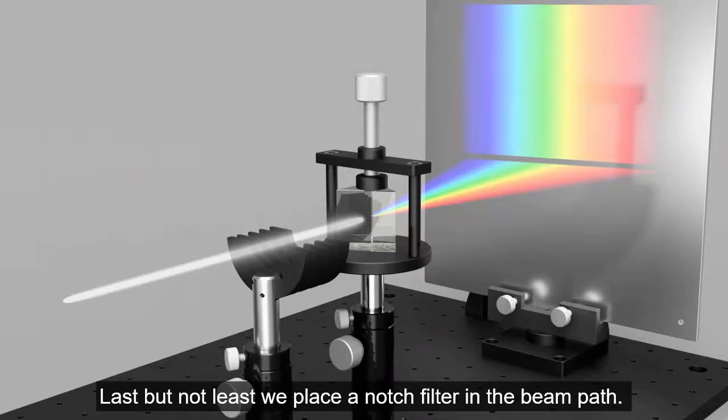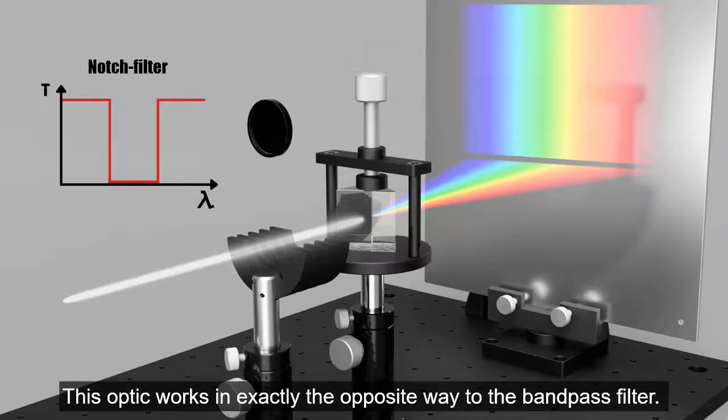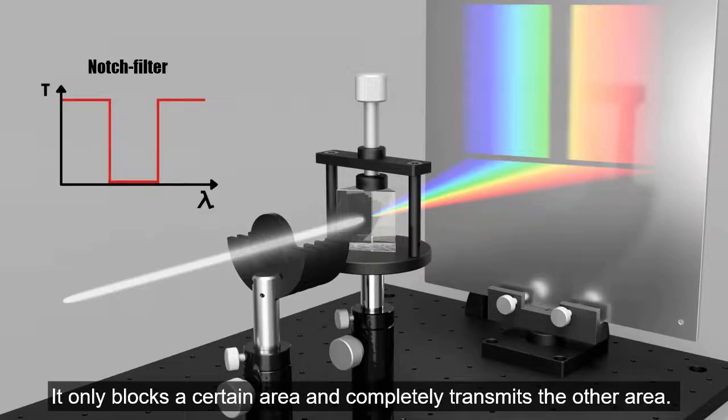Last but not least we place a notch filter in the beam path. This optic works in exactly the opposite way to the bandpass filter. It only blocks a certain area and completely transmits the other area.